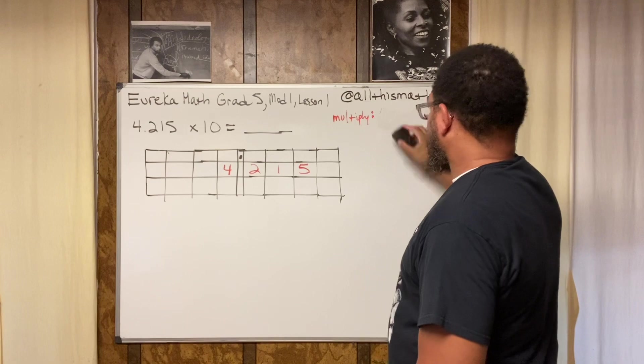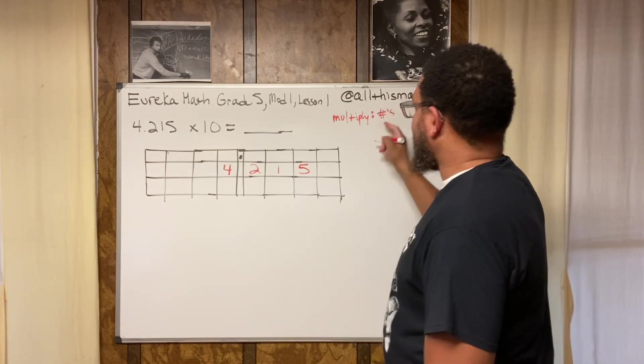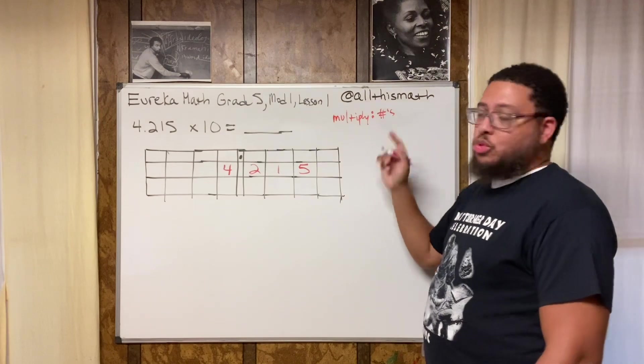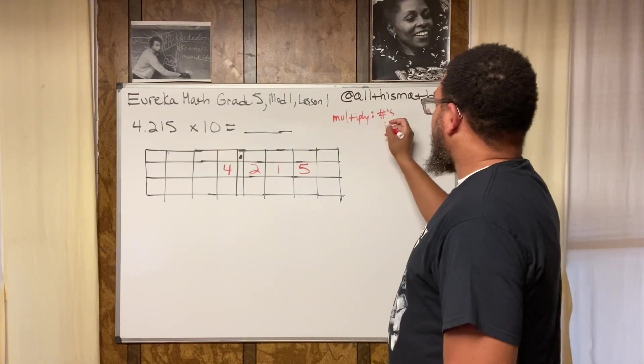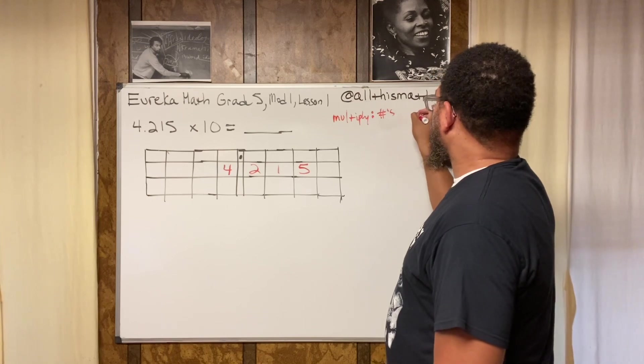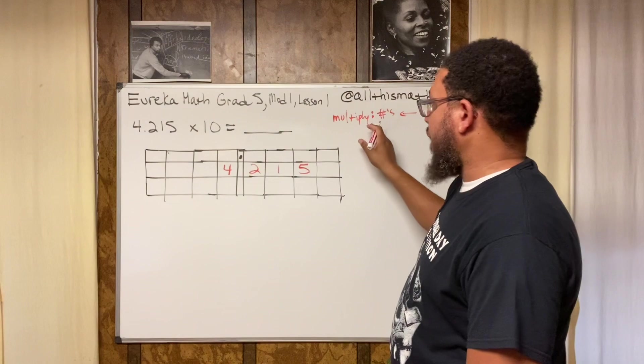This isn't even about the decimal point. This is about the numbers. Numbers—I know y'all think this is a hashtag, right? But that's the old school symbol for a number, the pound sign from the telephone. The numbers move to the left. Numbers move to the left when you multiply.